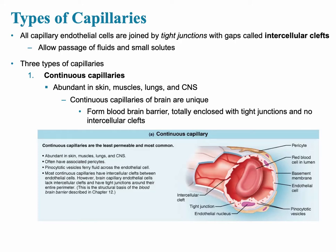There are three main types of capillaries, and we're going to take a look at them now. The first type of capillary is the most abundant, and it's found in places like the skin, the muscles, lungs, the central nervous system. These are referred to as continuous capillaries of the brain.